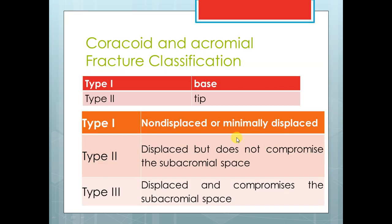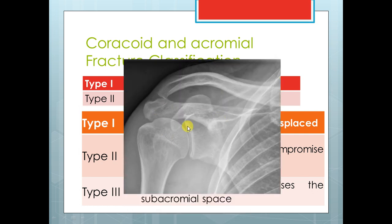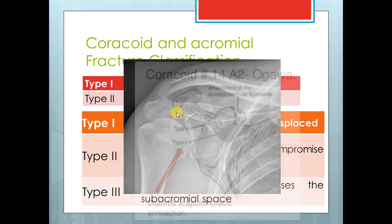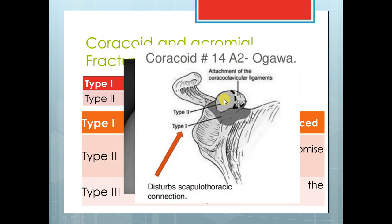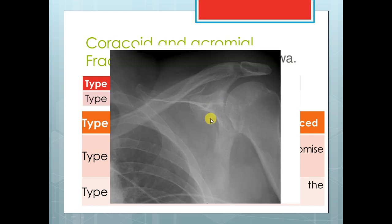Regarding coracoid and acromial process: if the fracture is at the base of the coracoid, this is Type 1. If the fracture is at the tip, this is Type 2. Type 1 at the base is usually unstable, proximal to the CC ligament. Type 2 at the tip is usually stable and no need for fixation.